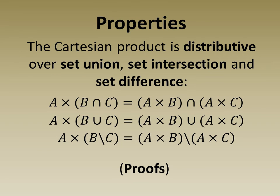Here are some properties of the Cartesian product. First, we know that it's distributive over set union, set intersection and set difference.